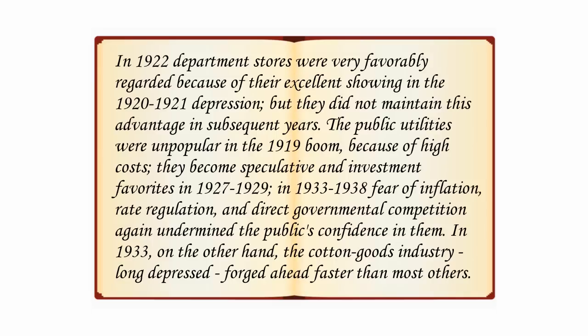Graham recounts how the preferences of the market would shift with time. In 1922, department stores were very favorably regarded because of their excellent showing in the 1920–1921 depression, but they did not maintain this advantage in subsequent years. The public utilities weren't popular in the 1919 boom because of high costs. They became speculative and investment favorites in 1927–1929. In 1933–1938, fear of inflation, rate regulation, and direct governmental competition again undermined the public's confidence in them. In 1933, on the other hand, the cotton goods industry, long depressed, forged ahead faster than most others.